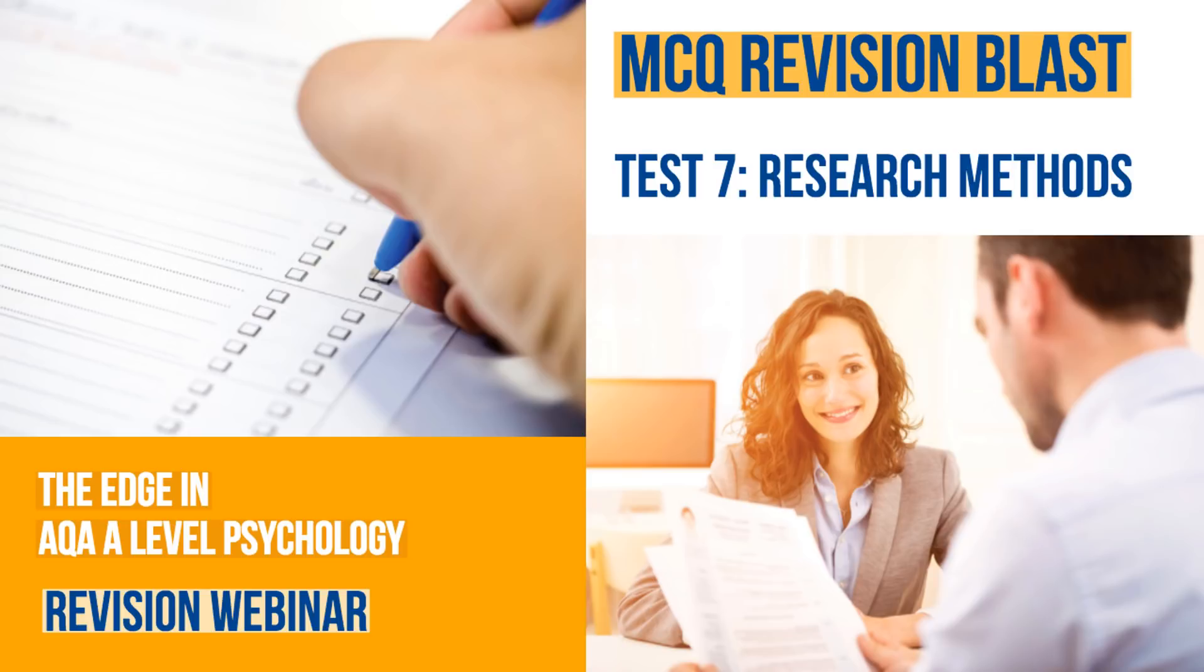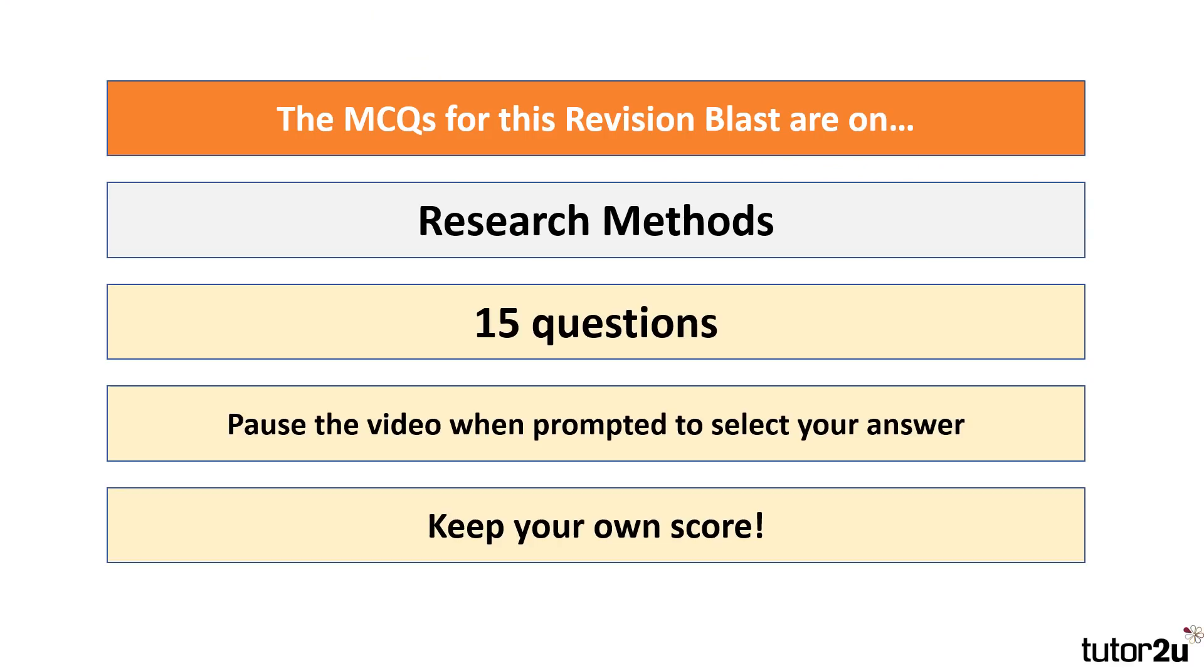Hi there, this is an MCQ blast from Tutor2u. We're going to do Test 7 today, which is Research Methods for AQA A-level Psychology. In terms of how it's going to work, you're going to see 15 questions come up. Pause the video after I've gone through each question, give yourself a bit of time to think about what the answer might be, and keep your score as you go along.